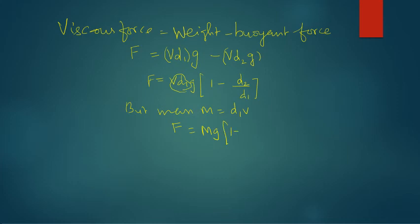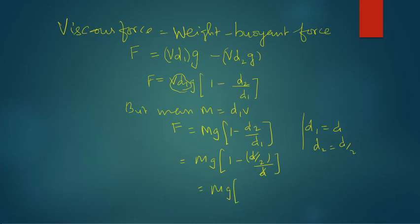The density of the object is d, and the density of the glycerin is d by 2. So mg into 1 minus d2 by d1.